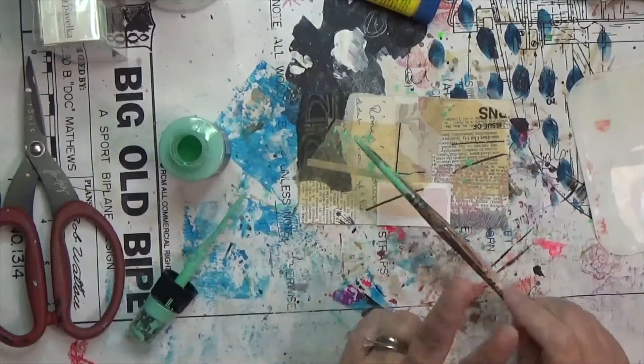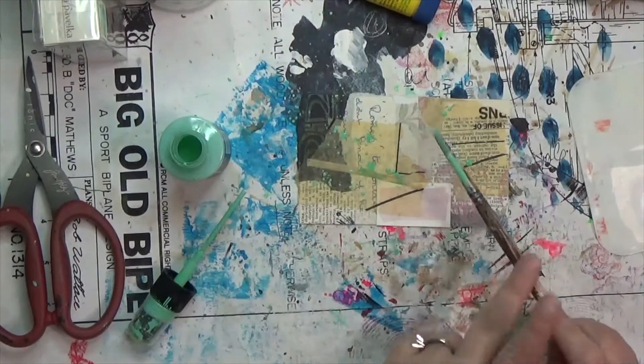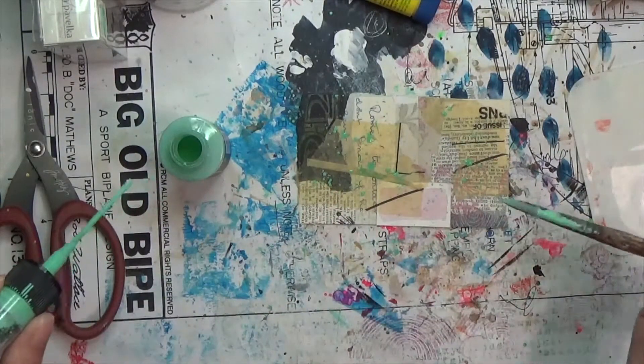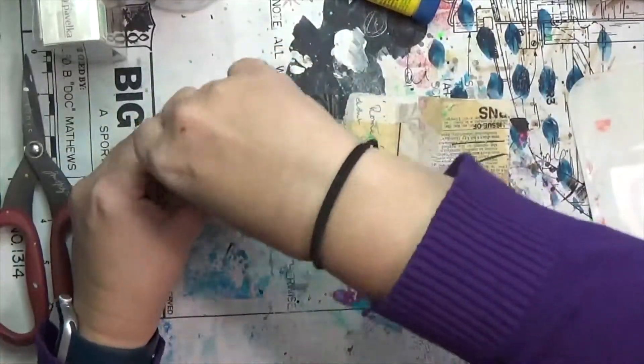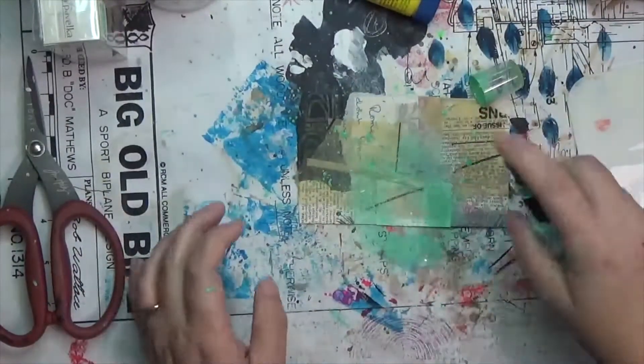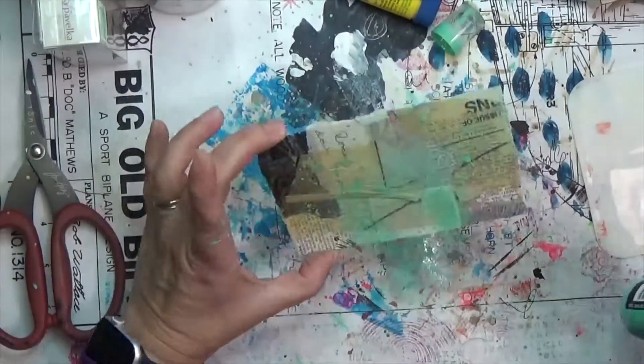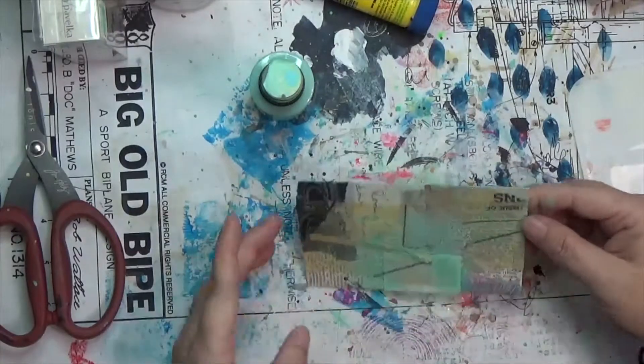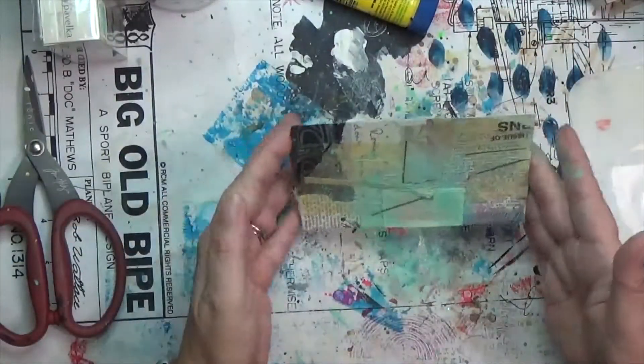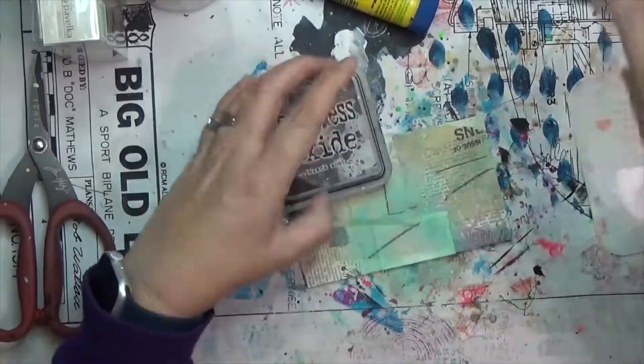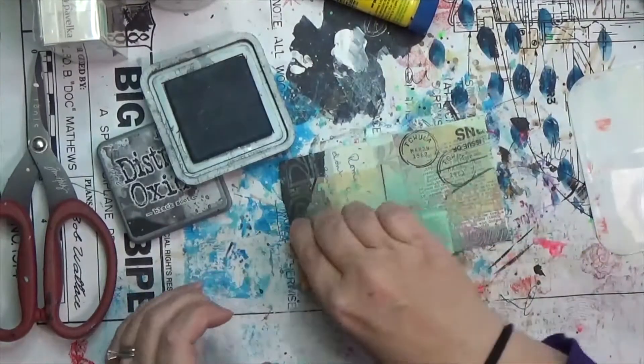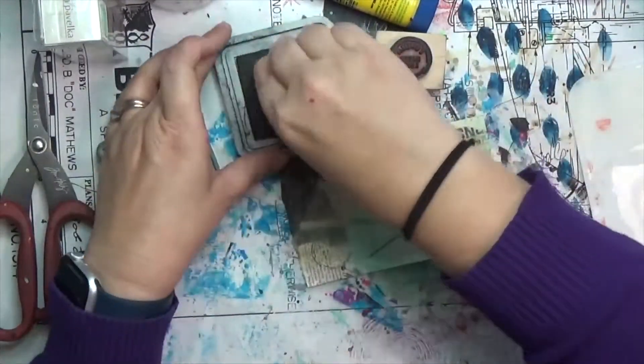This is a distress oxide spray in cracked pistachio, so I splattered some on there and I think I'm going to spray it also in a minute. I've also got a sanding block over to the side that I'll try to bring in later. So I've sprayed that cracked pistachio down. I think I'm going to dry this card real quick.